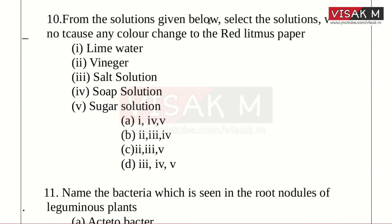Ninth: From the solutions given below, select the solutions that do not cause any color change to red litmus paper. The solutions are: lime water, vinegar, salt solution, soap solution, and sugar solution. The correct option is C: lime water, salt solution, and sugar solution — options 1, 3, and 5.